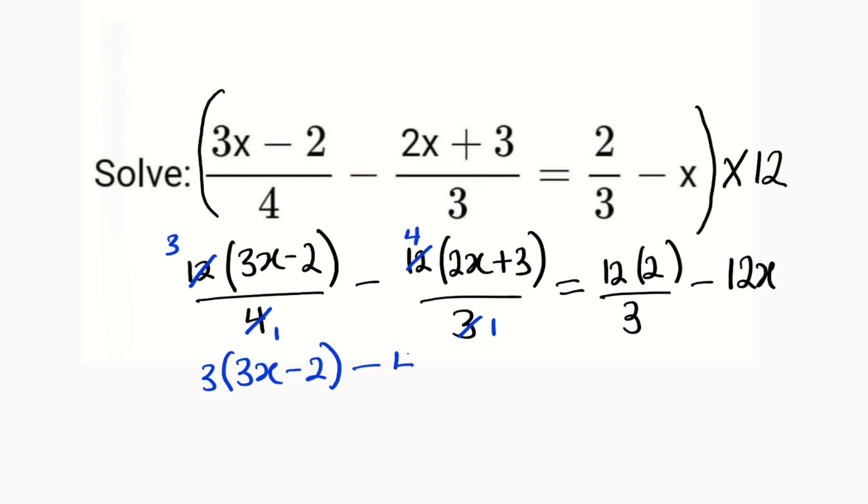Then we have minus here. 3 can go into 12 four times, so we have 4 in bracket. We have 4 multiplied by (2x + 3). Equality sign: 3 can go into 12 four times, we have 4 multiplied by 2, minus 12x.